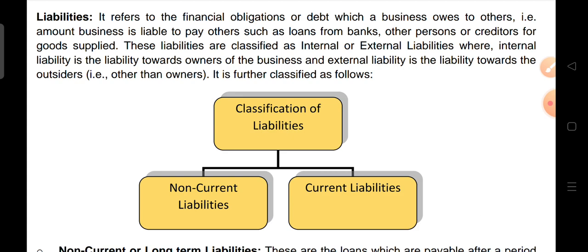These liabilities can be classified into internal and external. Internal liability is a liability towards the owner of the business. But if we have a personal liability, then it is an external liability.